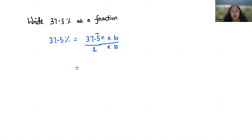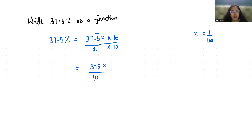So the numerator becomes 375% by 10. Now this symbol of percent denotes 1 by 100. So while removing this symbol you write 1 by 100. So 375 by 10 times 1 by 100 gives us 375 by 1000.